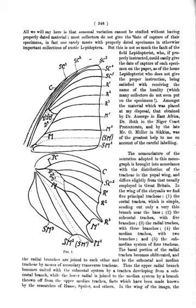Aculeate Hymenoptera: any member of a group of families that include the familiar stinging ants, bees, and social and hunting wasps. Acuminate: tapering to a long point. Aculeurin: class of insect growth regulators.